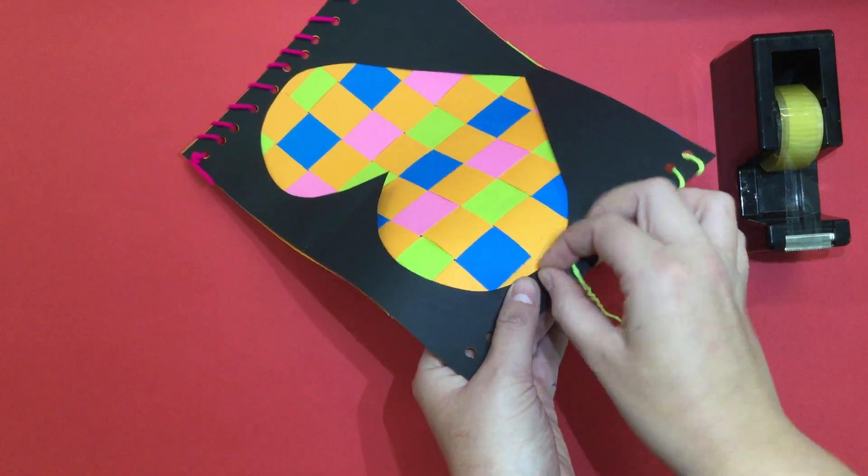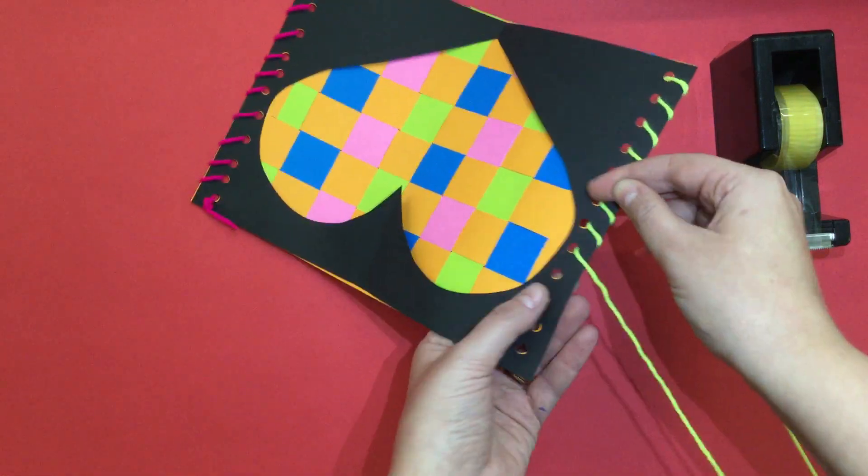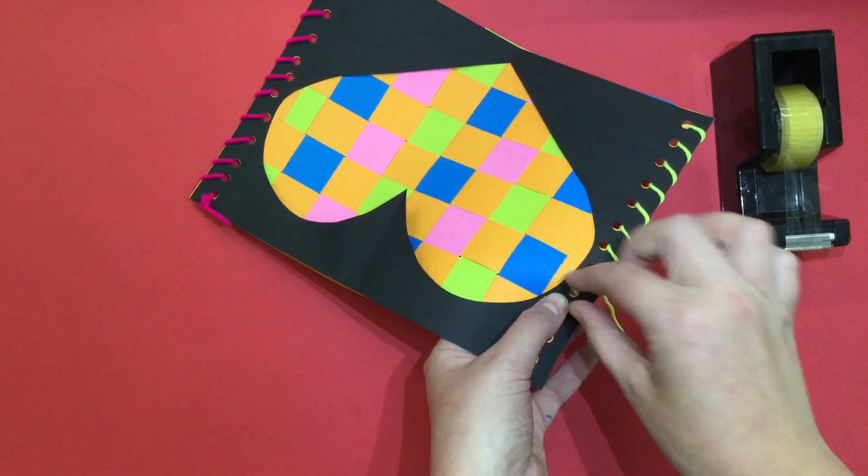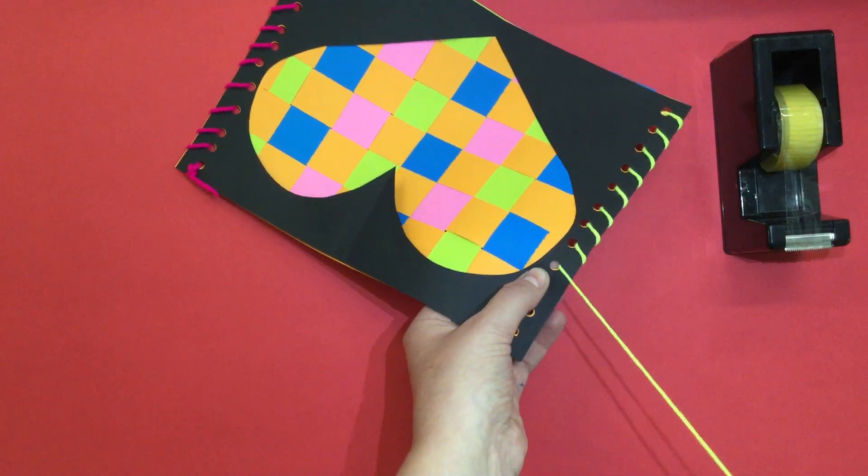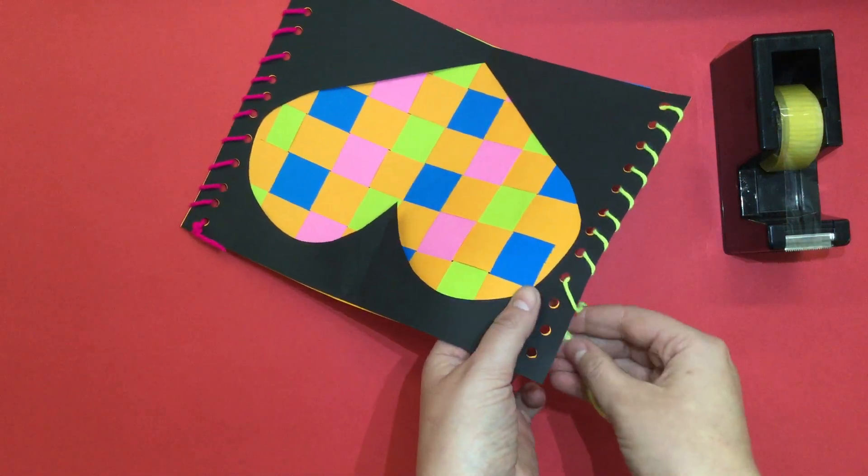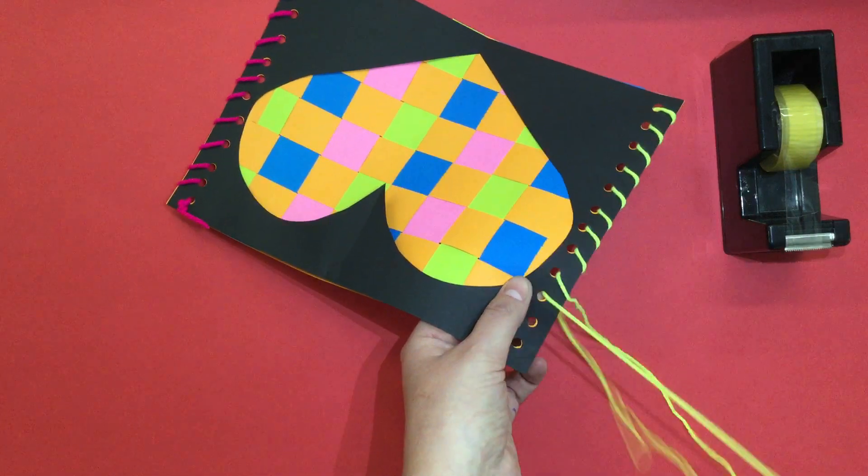We are doing a stitch called the whip stitch. Whip stitch! It's because it is going and curling around the side of my paper.